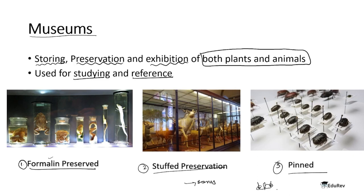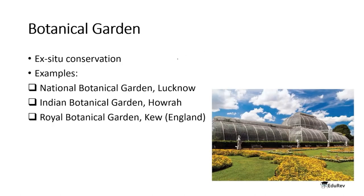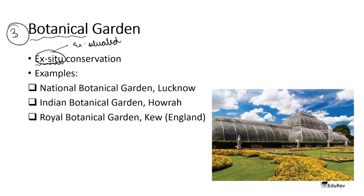The third taxonomical aid is botanical gardens. Here, species are taken out from their natural habitat and conserved at a different place — this is ex-situ conservation. Botanical gardens are examples of ex-situ conservation of plants. Examples include the National Botanical Garden Lucknow, Indian Botanical Garden Howrah, and Royal Botanical Garden England.